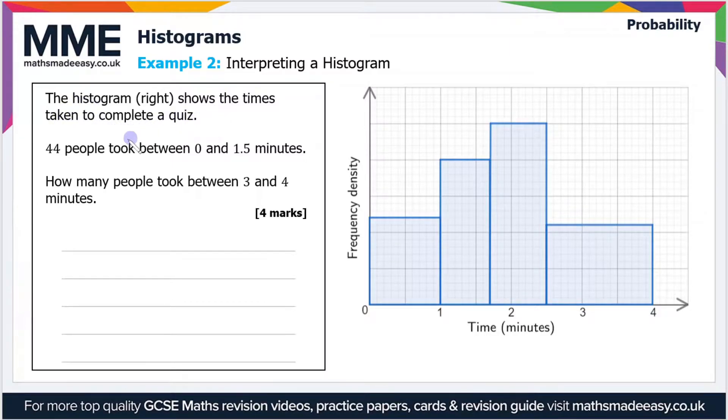The histogram on the right shows the times taken to complete a quiz. 44 people took between zero and 1.5 minutes. How many people took between three and four minutes?